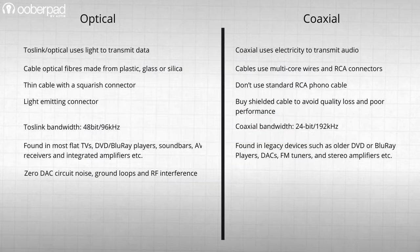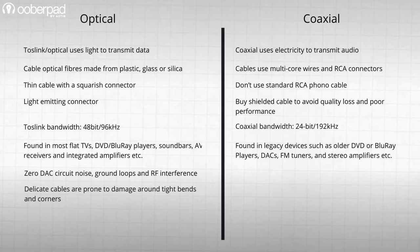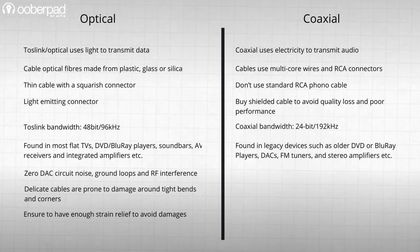TOSLINK is immune to DAC circuit noise, ground loops, and RF interference. However, the fiber core of TOSLINK cables is delicate and needs to be handled carefully, especially around tight bends and corners. Ensure you have enough strain relief to avoid damage.